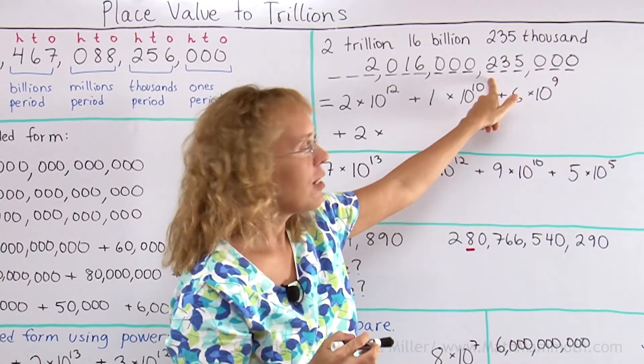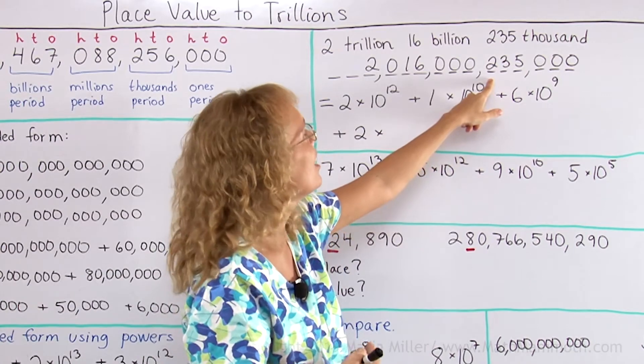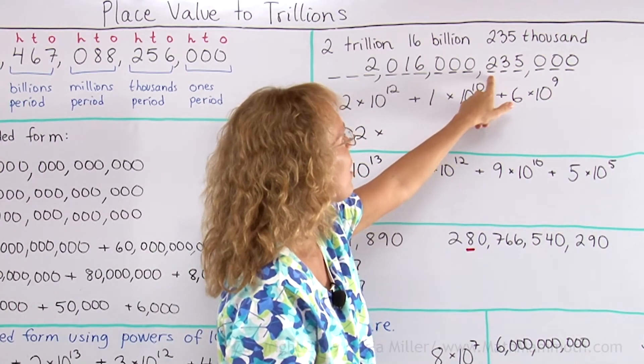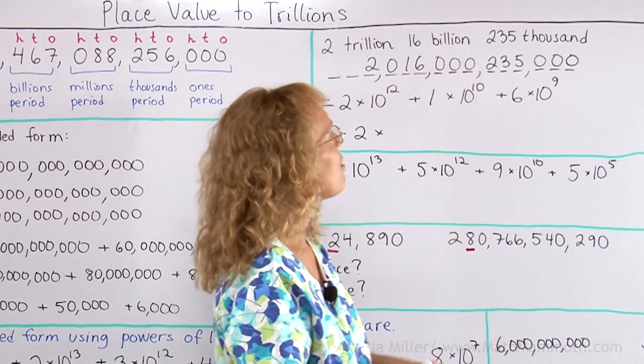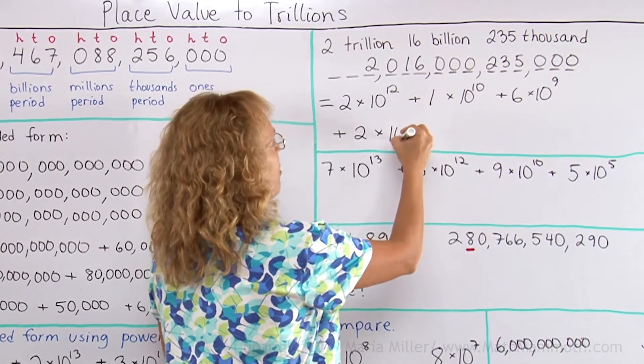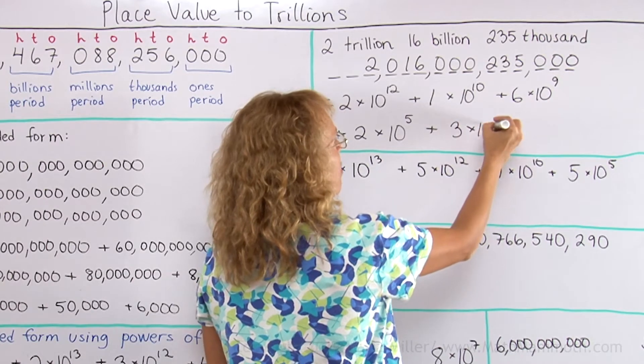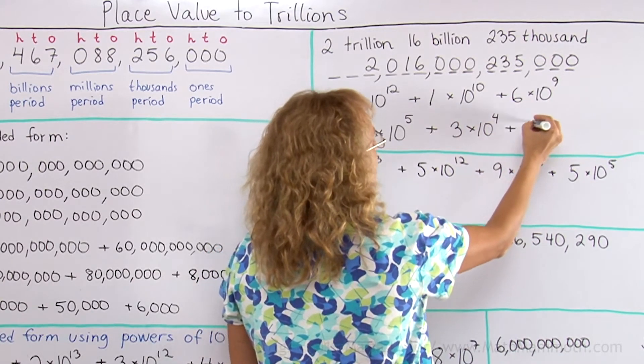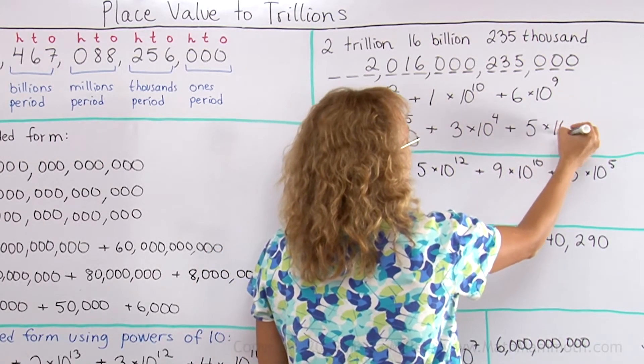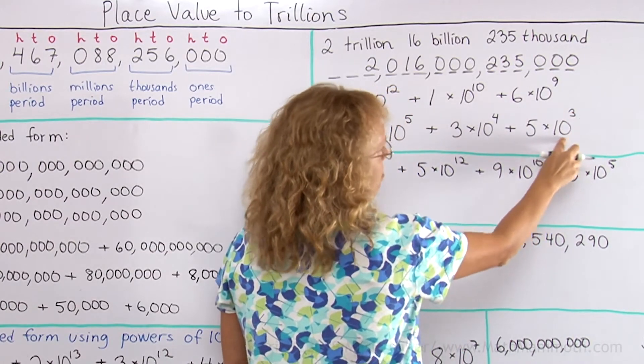plus 2 times. This one is in the 100 thousands place, so hopefully this is a little easier. 100 thousand would be if I had 1 here followed by 5 zeros, so 10 to the 5th. And then 3 here, the next digit, must be 10 to the 4th. And then 5, the last one here, is 10 to the 3rd power, which is 1,000.